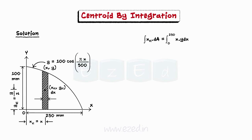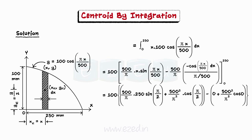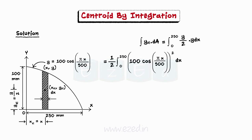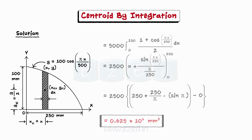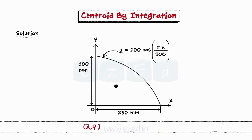Next, we integrate the product of the area of the strip and its x-coordinate about the same limits used previously. On evaluating this integral by the product rule and applying the limits, we find the integral. Similarly, we integrate the product of the area of the strip and its y-coordinate about the same limits. On evaluating this integral by the product rule and applying the limits, we find the integral. Using these two formulae, we can find the x-coordinate and y-coordinate of the plane area. Thus, the centroid of the plane area has its coordinates determined.